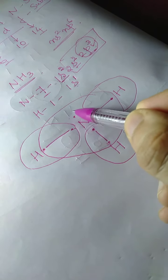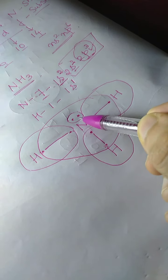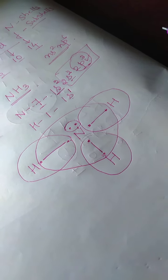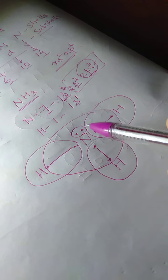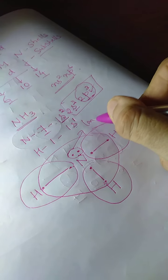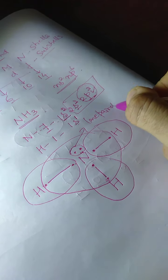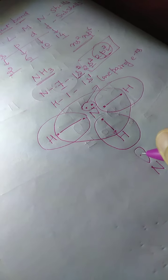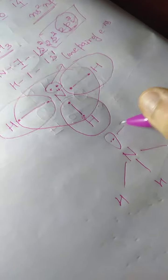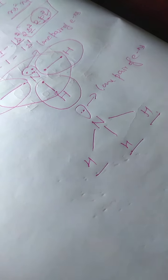There are 2 electrons — 1 lone pair — present on the nitrogen atom which are not participating in bond formation. Such electrons are called lone pair of electrons. So ammonia is written with this lone pair, and the 3 hydrogen atoms forming bonds with the nitrogen.